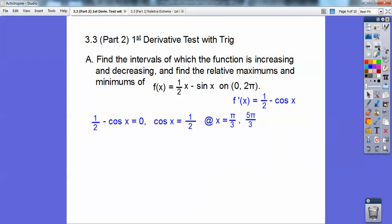So now I set that equal to zero, and cosine of x equals a half at pi over three and five pi over three in quadrants one and four.